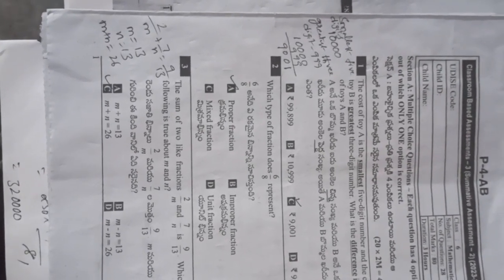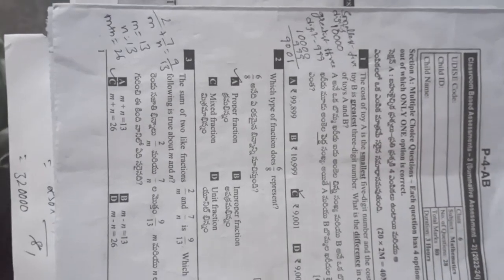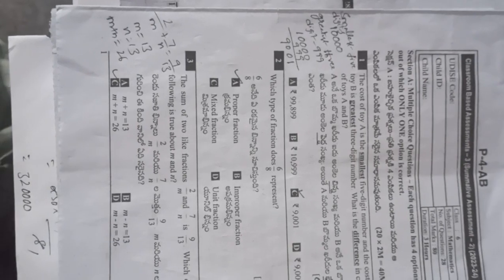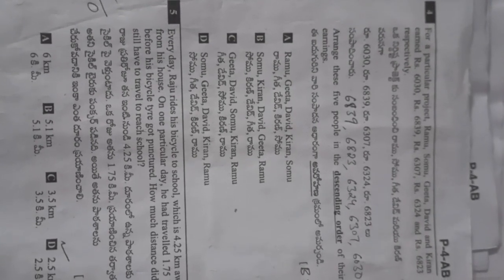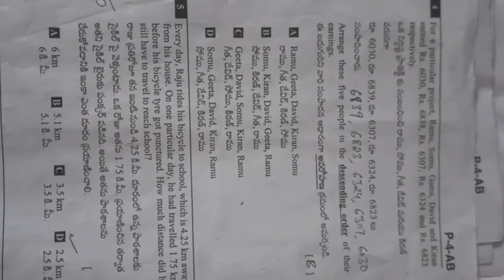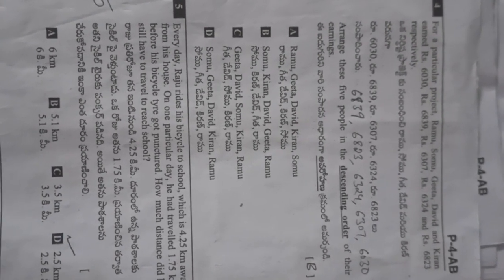2 by m plus 7 by n equals 9 by 13. Since 2 plus 7 equals 9, m value is 13 and n value is 13. So m plus n equals 13 plus 13, which is 26. The correct option is C.